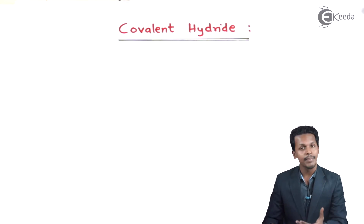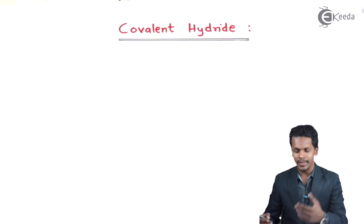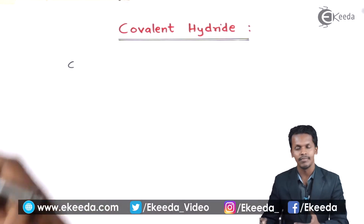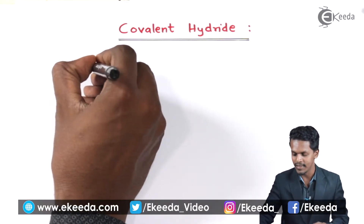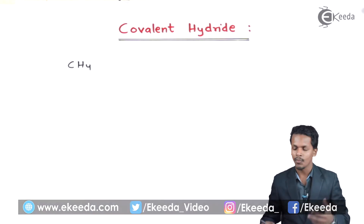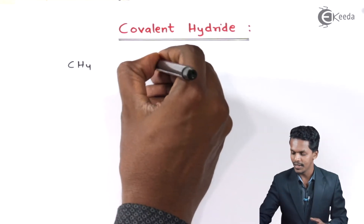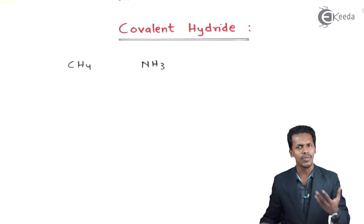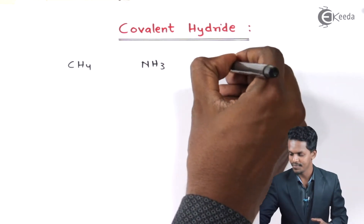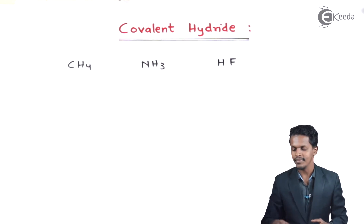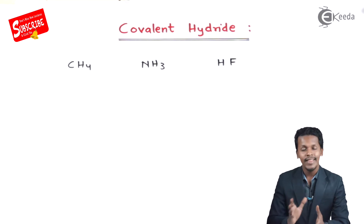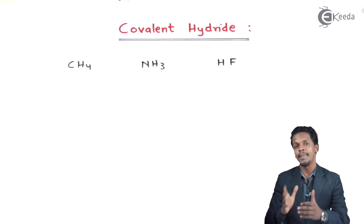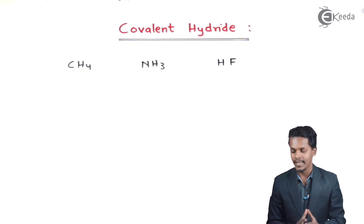For example, if I talk about the P block element like carbon, carbon can easily form a bond with hydrogen, and this is what the molecule CH4 is. Other examples are NH3 and HF. So these are the three examples of covalent hydrates.